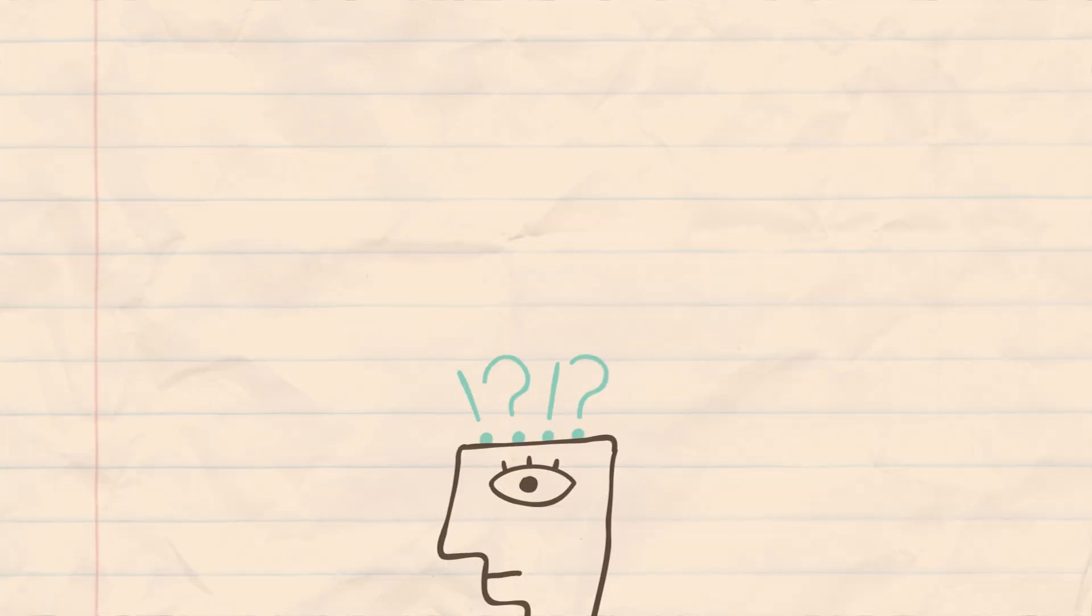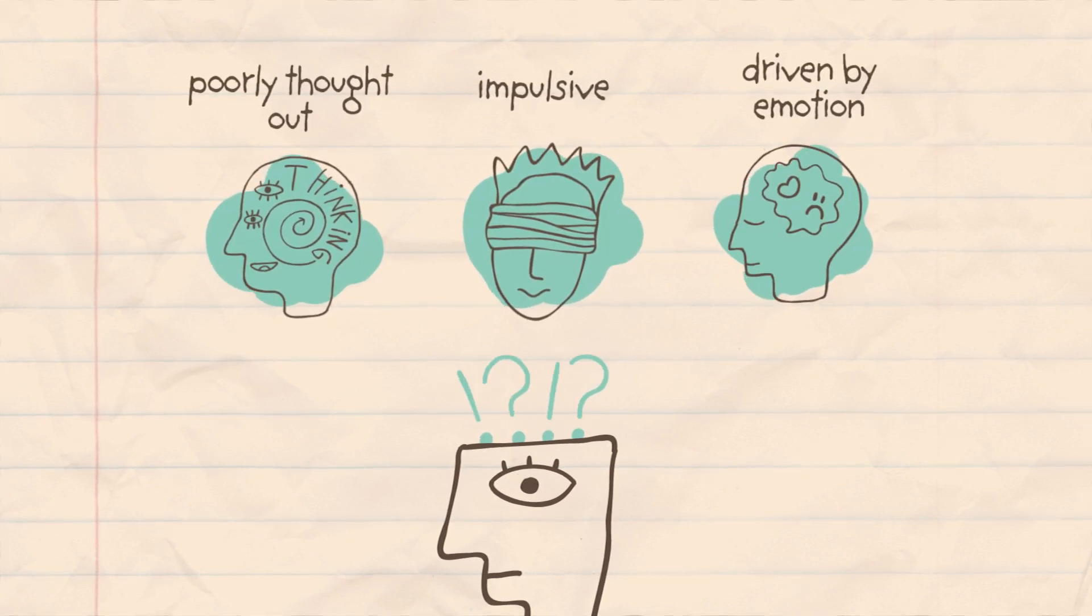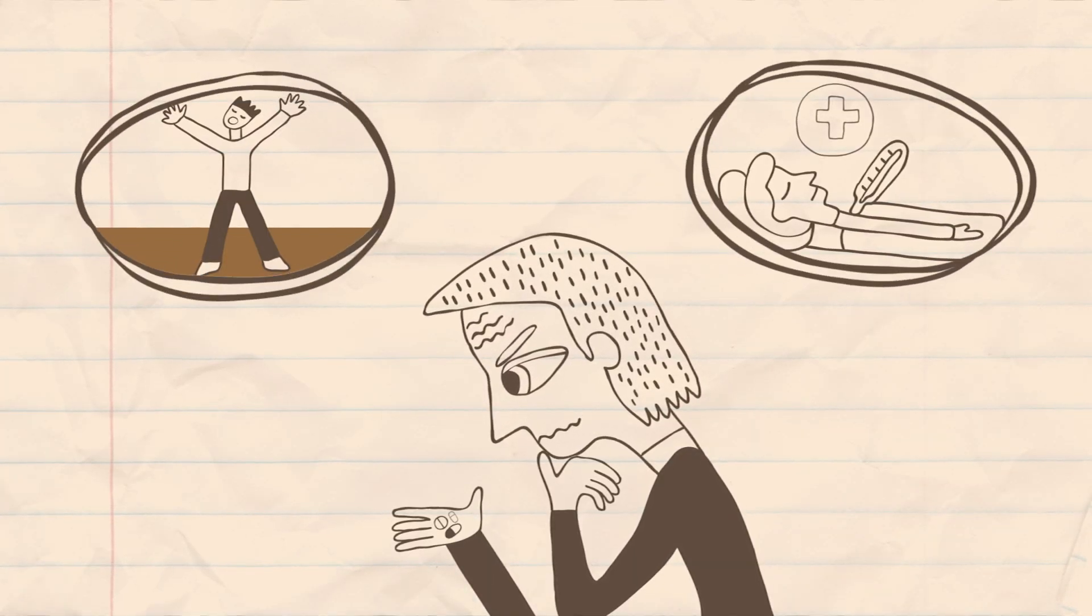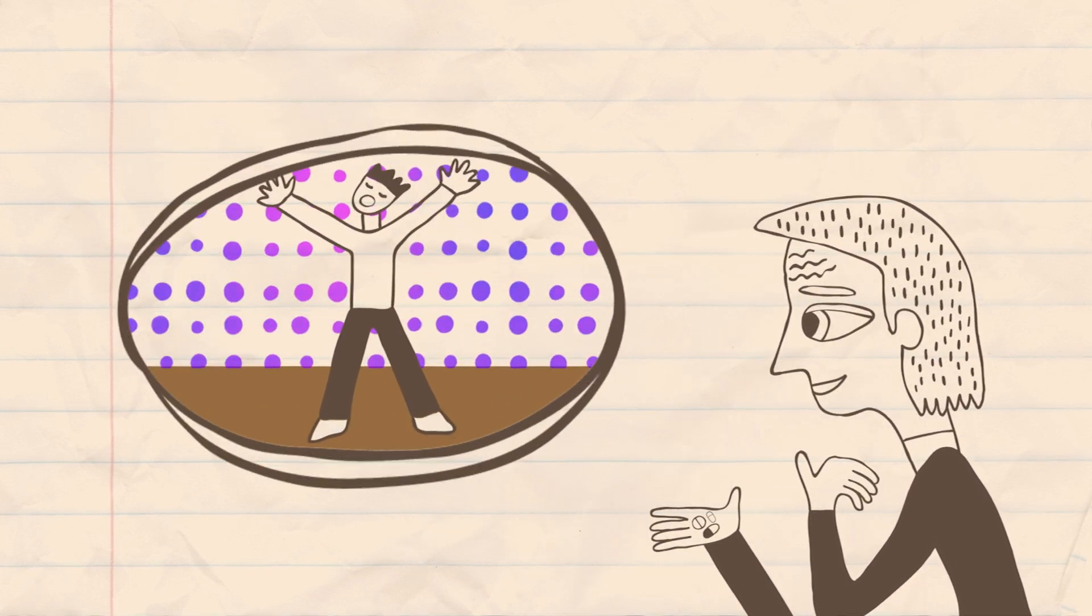This is why adults can sometimes see young people's decisions as impulsive, poorly thought out, or driven by emotion. And whilst we know young people can accurately recognize and assess risk, they often place a higher value on a potential reward when weighed up against the potential risk.